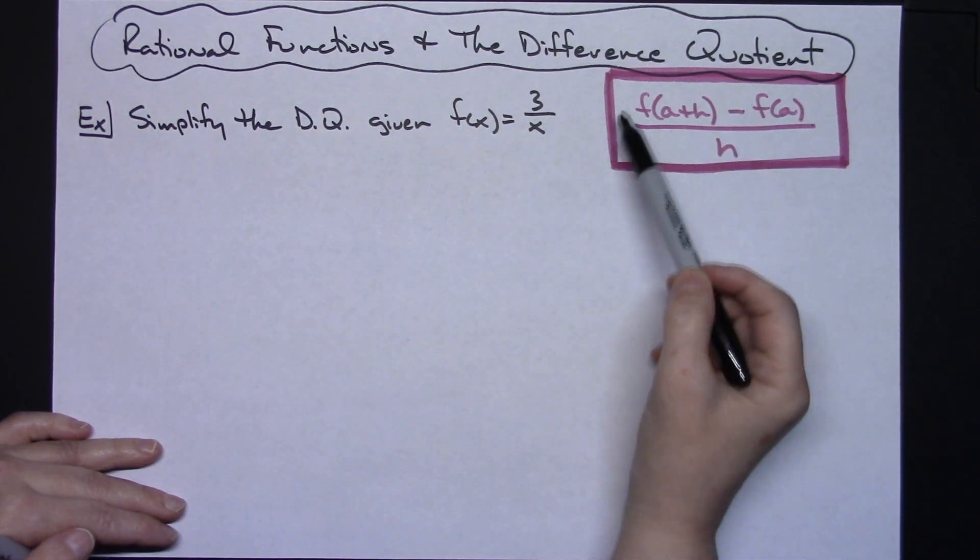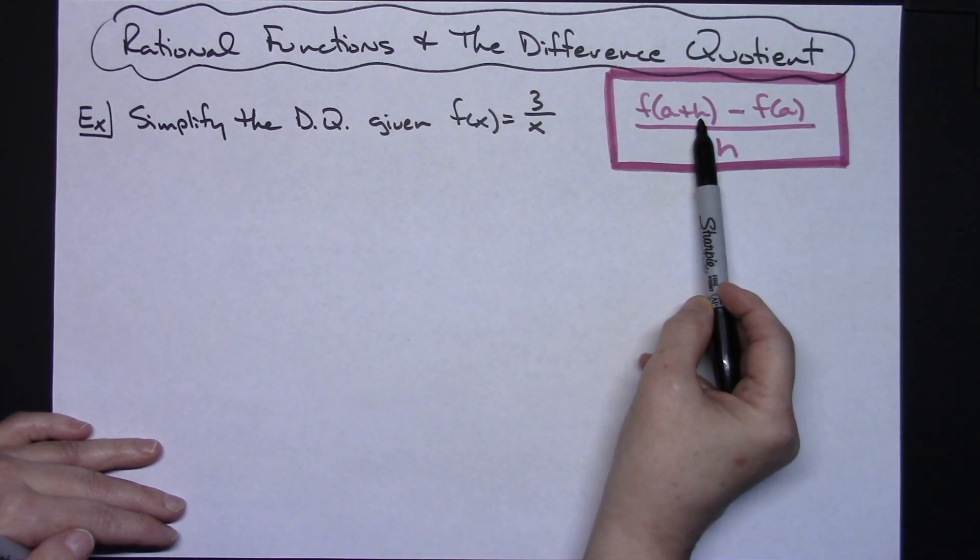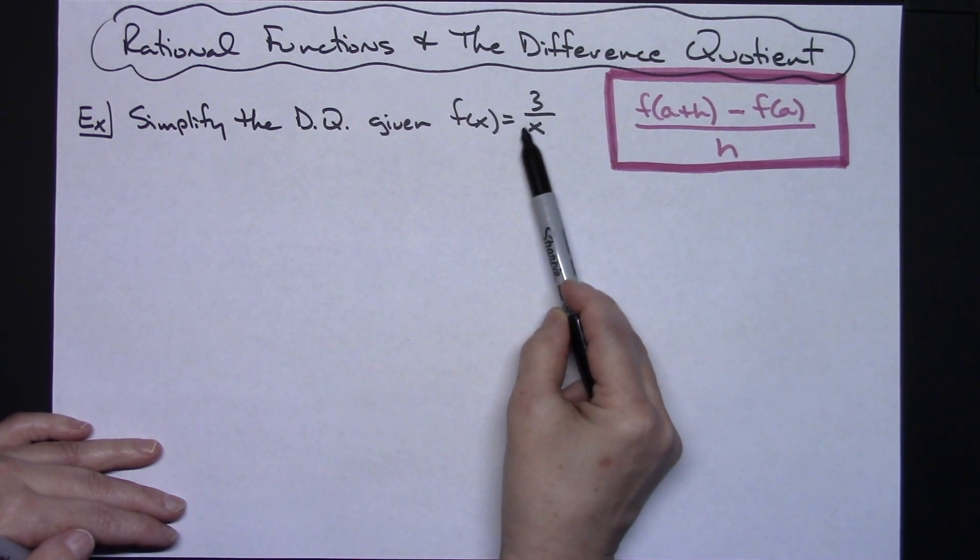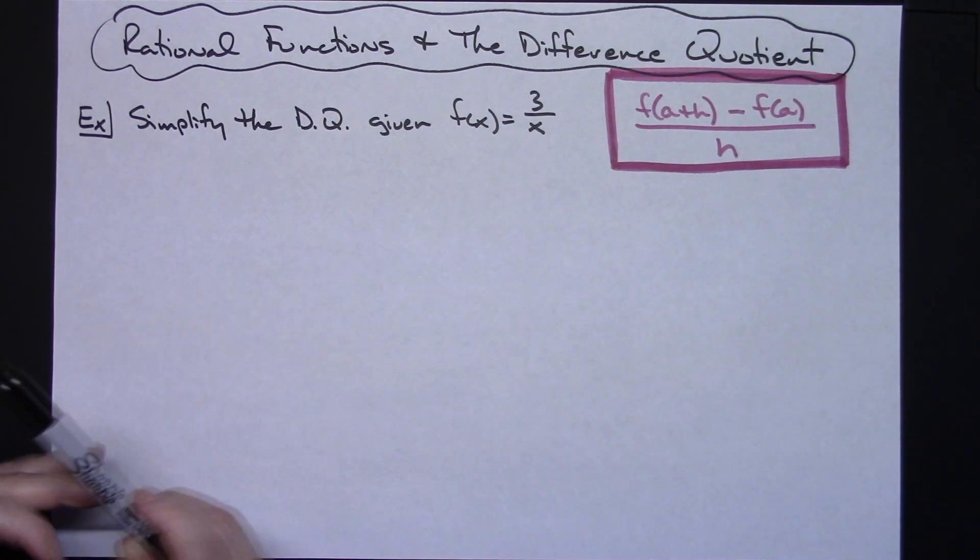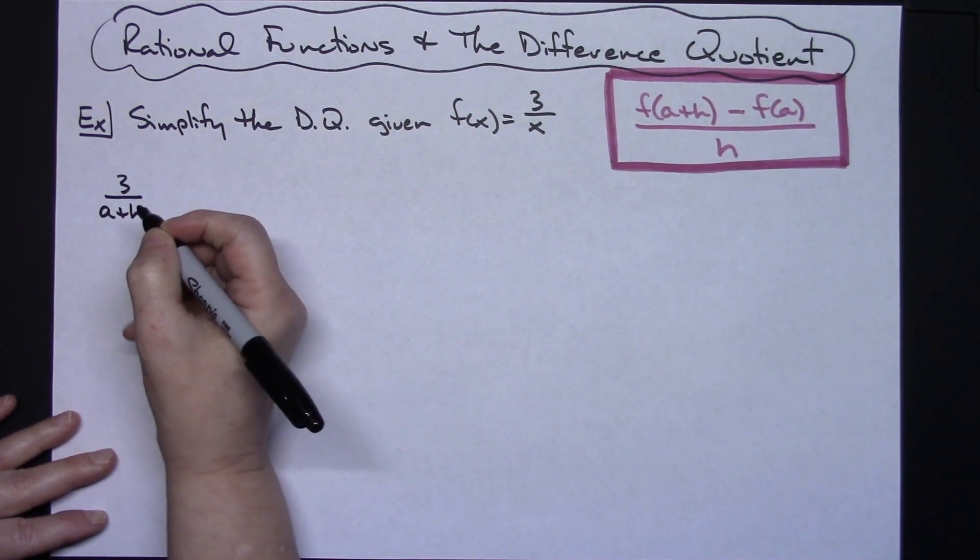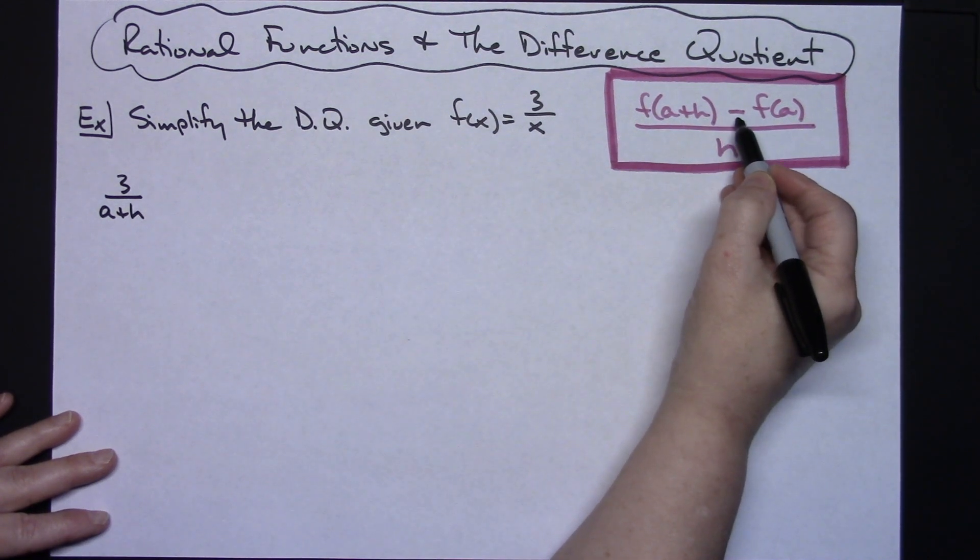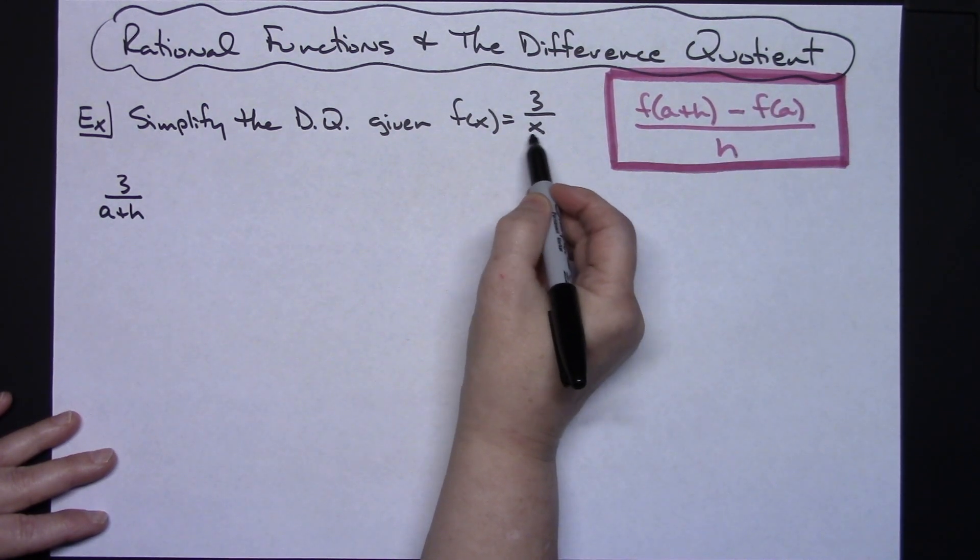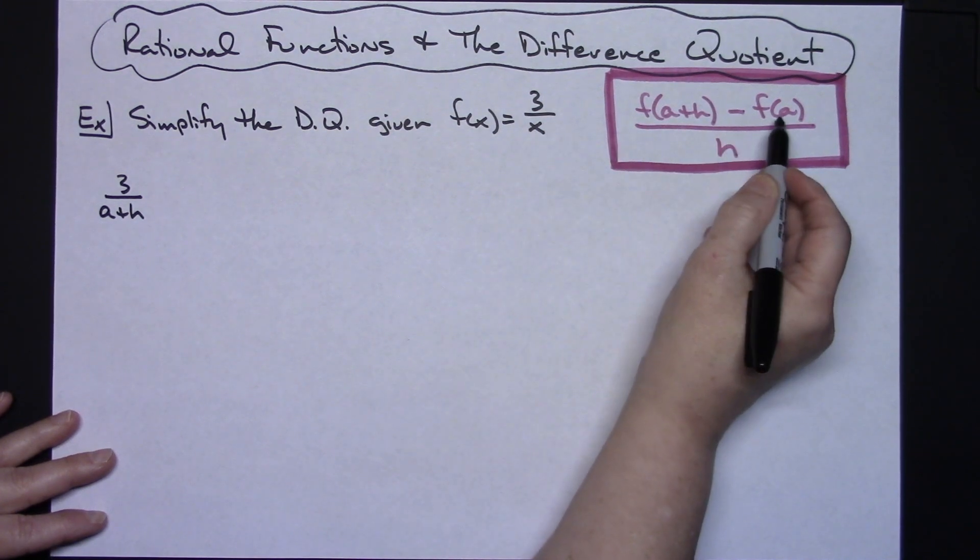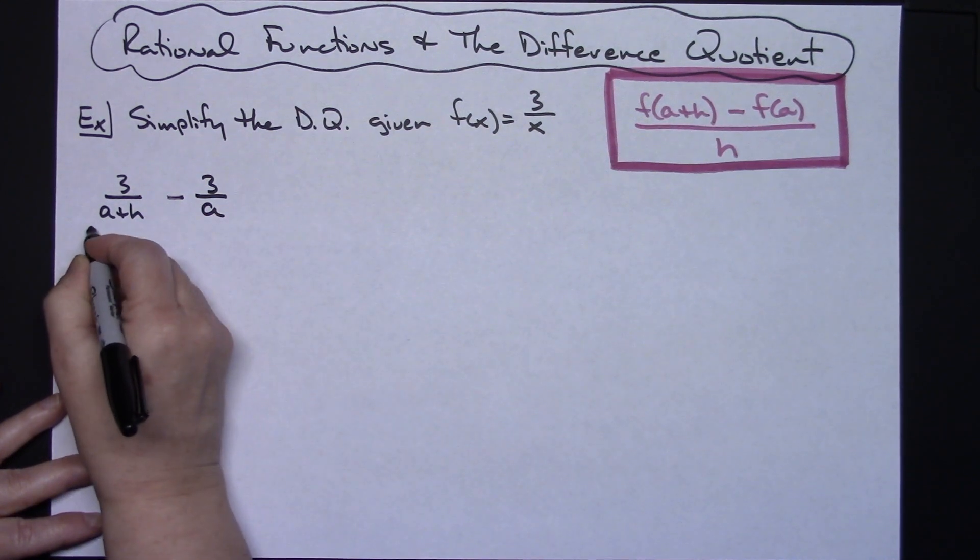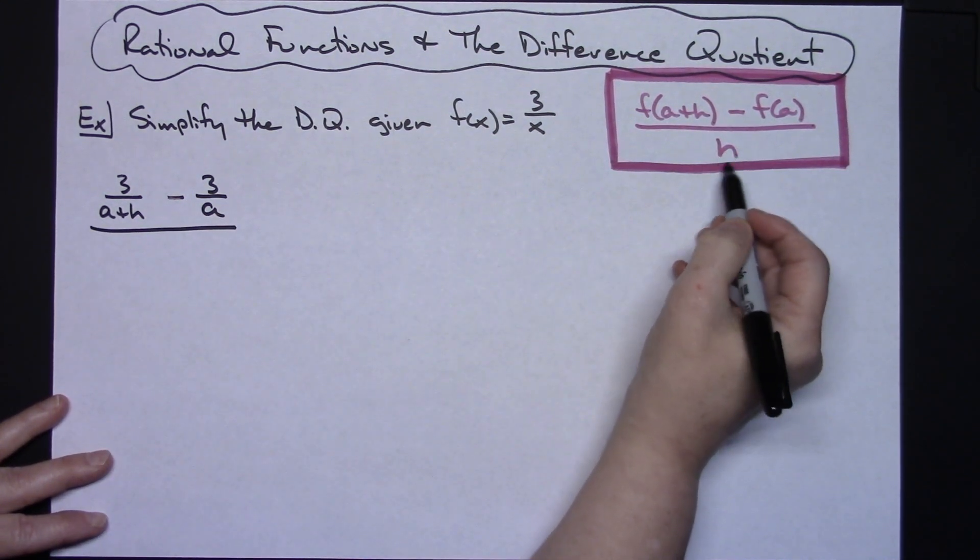We're going to start with this function and we're going to use this formula. This is to take a plus h and put it into the f function. The only place I have to put that into the f function is right there in the denominator, so then I'm going to have 3 over that a plus h. Now it says minus the function when a is put into the function, so I'm going to put a into the function. The only place to put a in the function is right there on the bottom, so I have to have a minus for the formula, so minus 3 over a, and then all over the h.